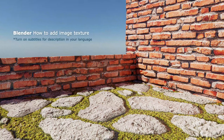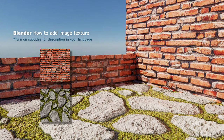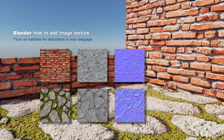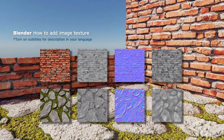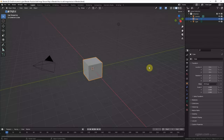Hello, this video will show how to add image textures in Blender. I will show how to add albedo map, roughness map, normal map, and displacement map into this scene. This texture is generated by an AI texture generator — you can find a video in this channel showing how to get these textures.